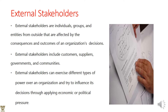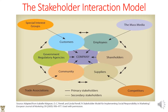External stakeholders include customers, suppliers, communities, governments, and so on. They can exercise different types of power in an organization — making the organization answer for its actions through economic, political, or legal means. External stakeholders have their interests tied within the broader perspective of the business operation.